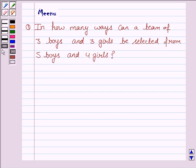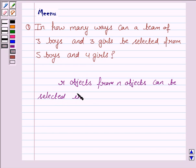Before solving this question, we should know the theory of combination which says that r objects from n objects can be selected in nCr ways.